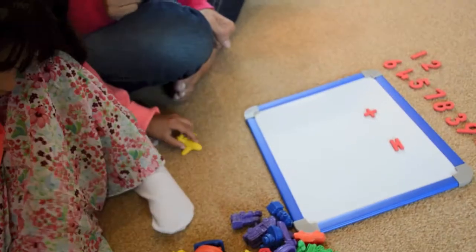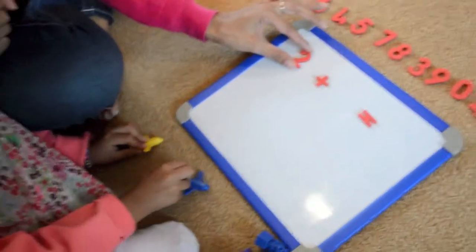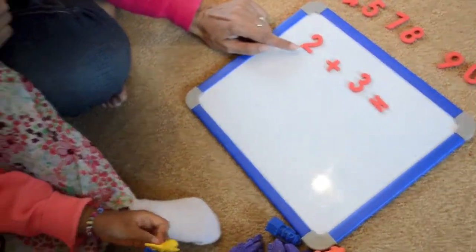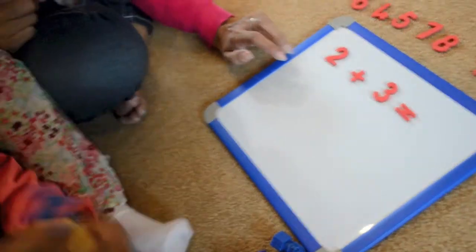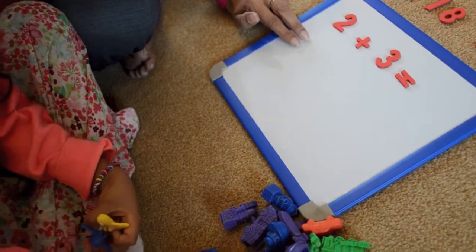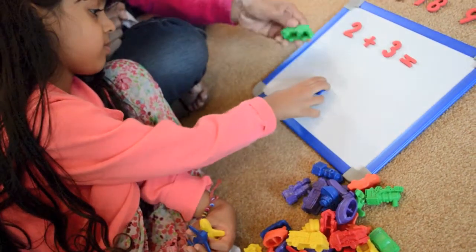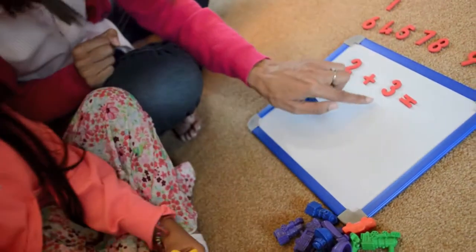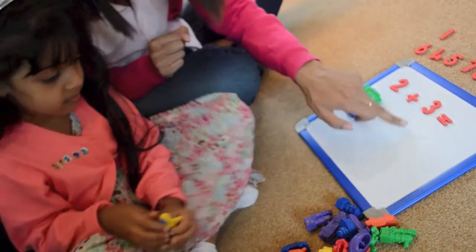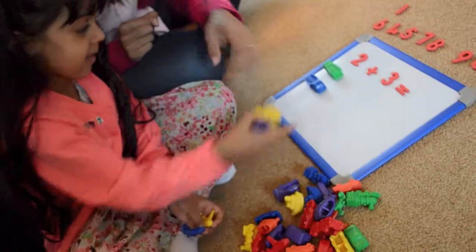Mommy's going to do some adding with you using some objects. What number is that? Two. So what two objects do you want to put? Two fire engines, okay. And what number is that? Three. And what do you want to put three of? Shall we put something different?